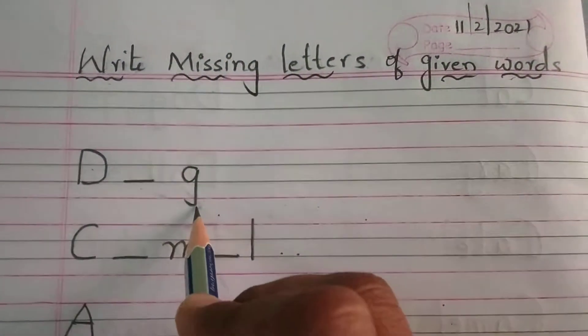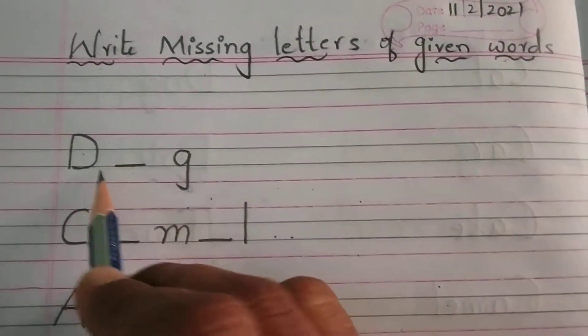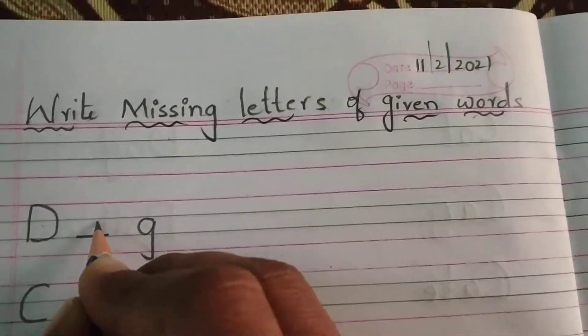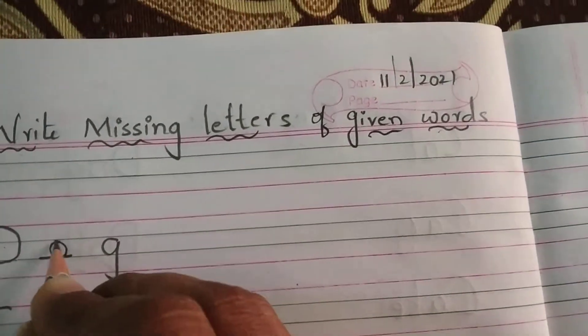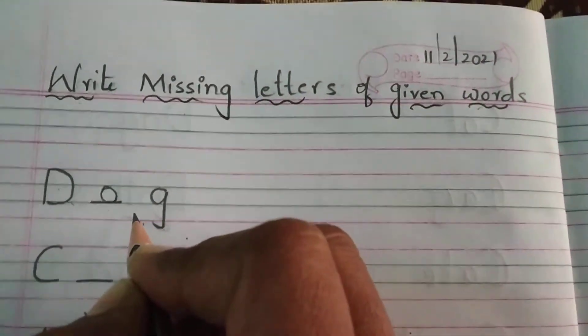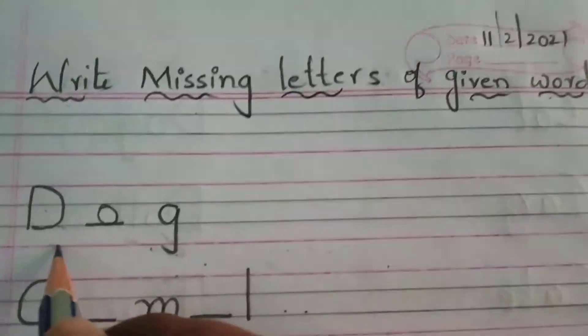D dash G. What will come? D O G — dog. Yes, D O G — dog.